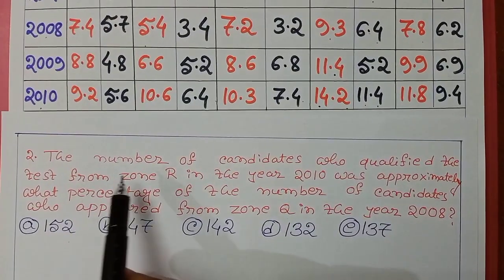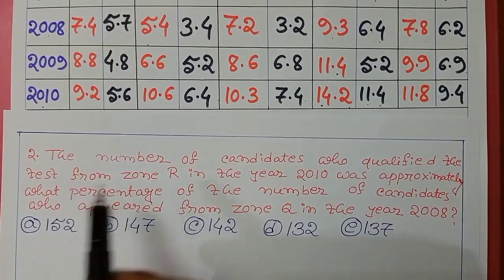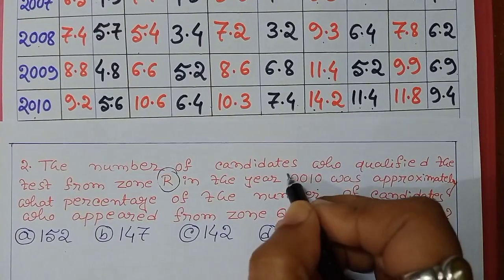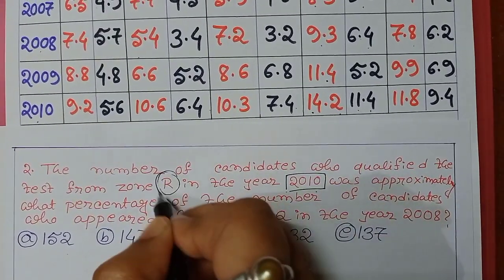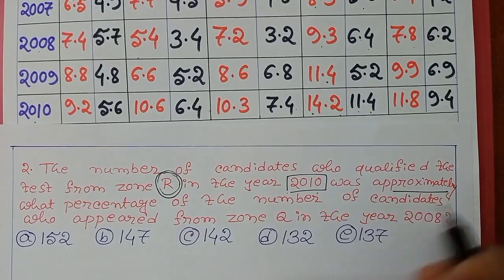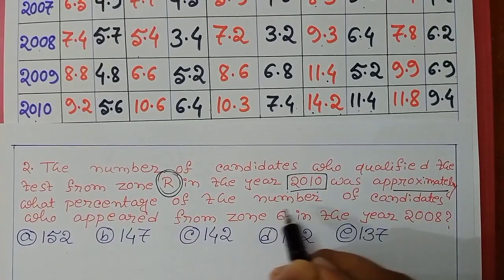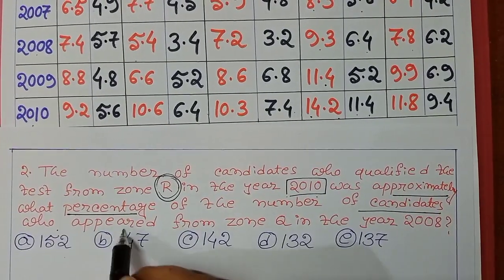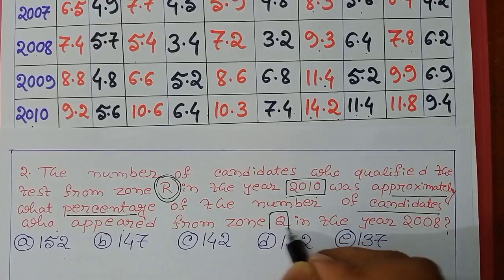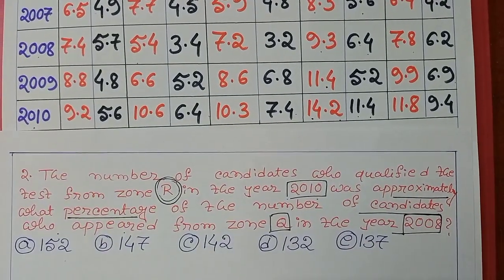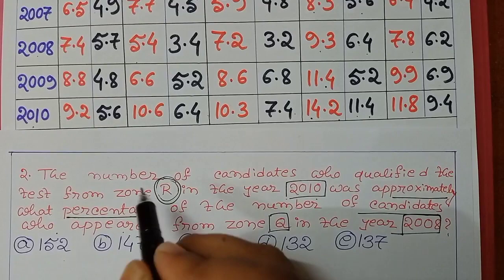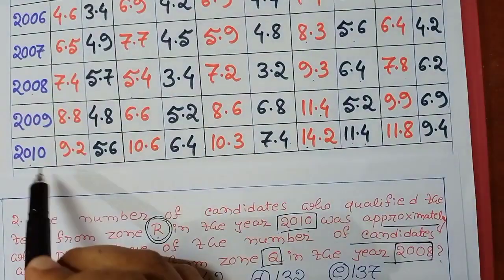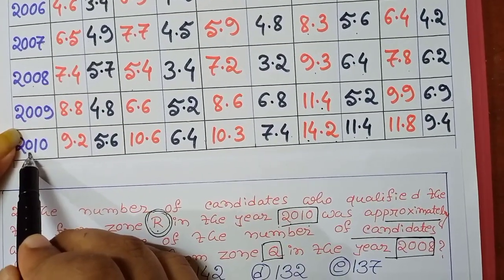Next question: the number of candidates who qualified the test from zone R in the year 2010 was approximately what percentage of the number of candidates who appeared from zone Q in the year 2008? We mark the main points: zone R, year 2010 for qualified candidates, and zone Q, year 2008 for appeared candidates.